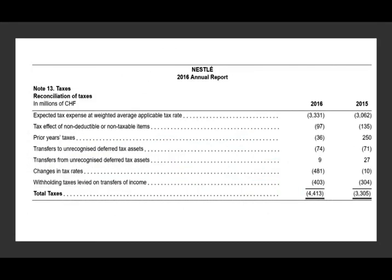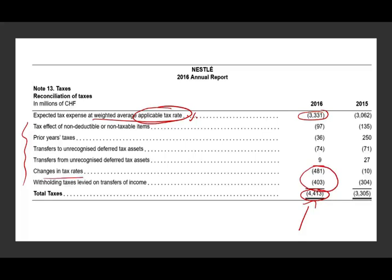Another way to do the reconciliation — the way Nestle did it — is to use the weighted average applicable tax rate. Based on that rate, this is how much taxes they should pay, plus or minus adjustments, and they end up paying this much. Two major reasons for differences shown here include a change in tax rate and withholding tax levied on the transfer of income. In a prior year, they had a large tax credit and received a refund. Either method is acceptable — you just have to show the expected tax under the applicable rate and what you actually paid.